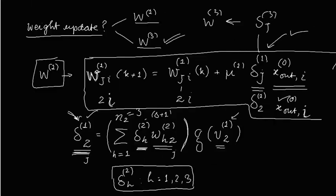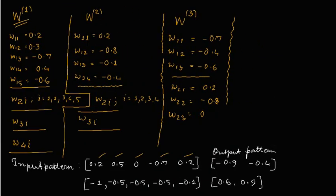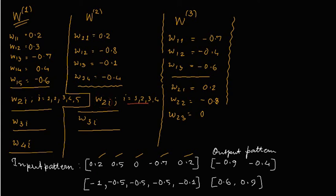Our weight matrix will be of size 5 cross 4, so each row will be having 5 weights. Similarly the second row will be having 5 weights. W3i is the 3rd row having 5 values and W4i is the 4th row. When we come to the weights of the second layer, each row will be having 4 weights. W3 will be having its size 2 cross 3, with first row having 3 values and second row having 3 values.